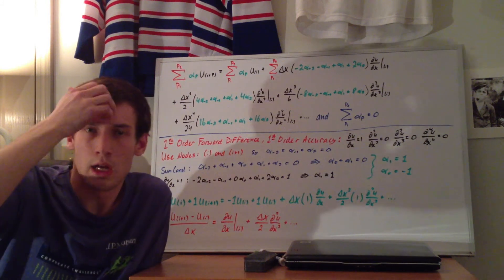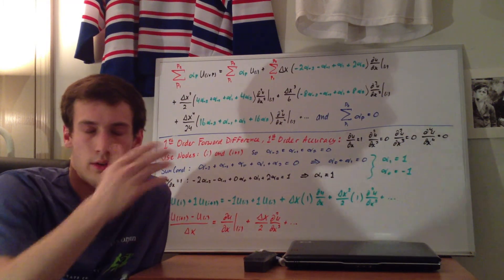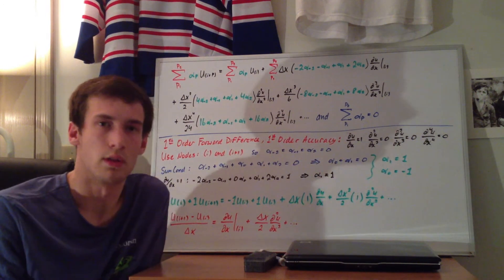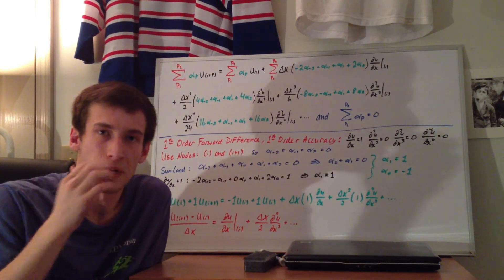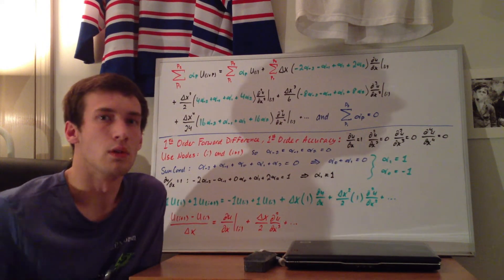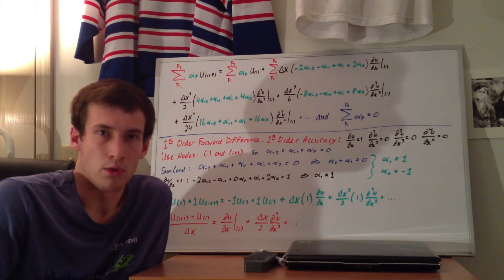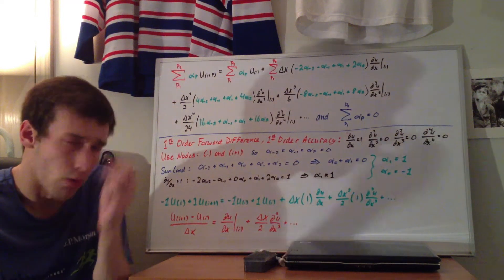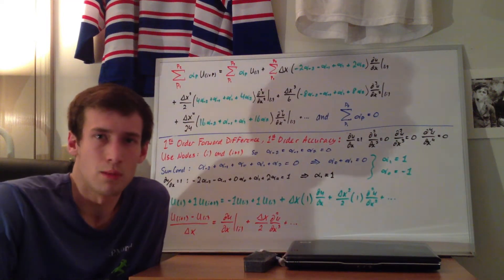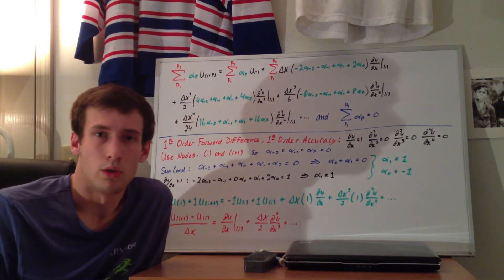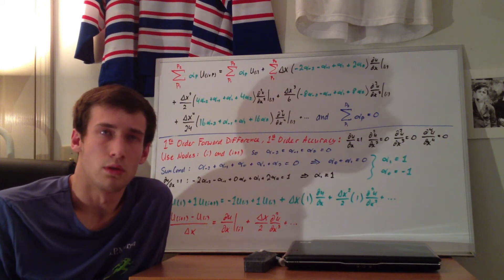Hey everyone. I just uploaded the first video from this two-part series on finite difference approximations using a general Taylor series formulation where you choose your own stencil — meaning you choose the points, the order of the derivative, and the order of accuracy you want. This example I'm going to go through is the first order forward finite difference.